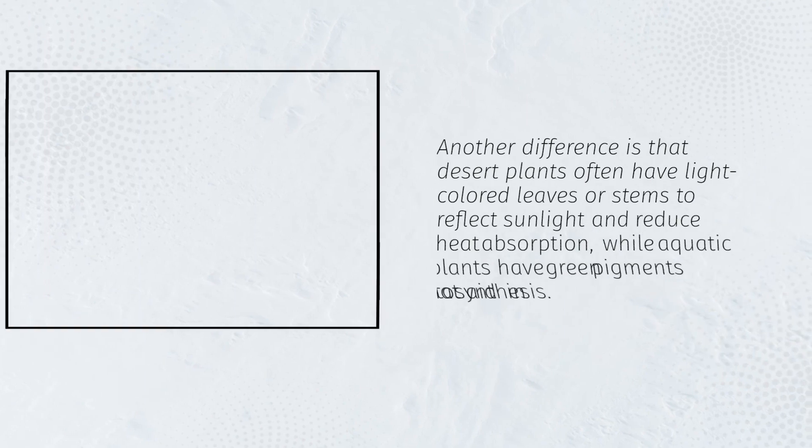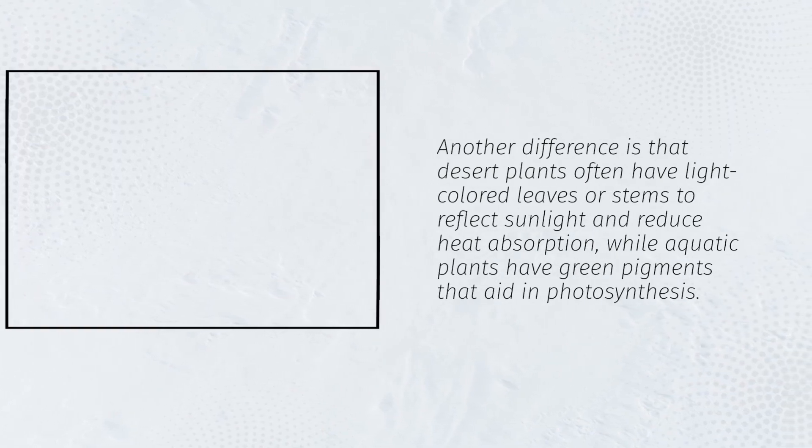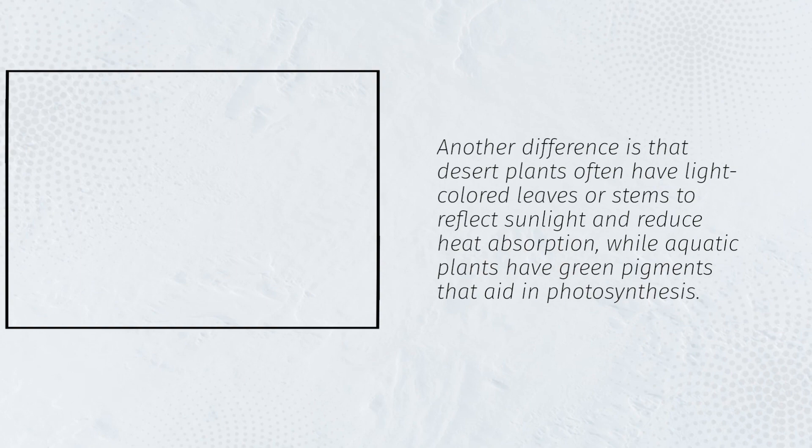Another difference is that desert plants often have light-colored leaves or stems to reflect sunlight and reduce heat absorption, while aquatic plants have green pigments that aid in photosynthesis.